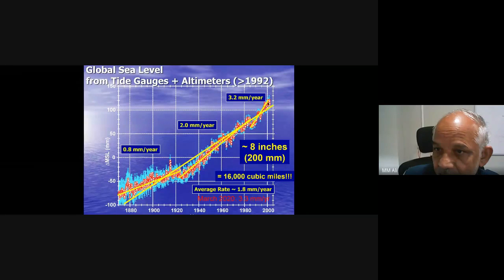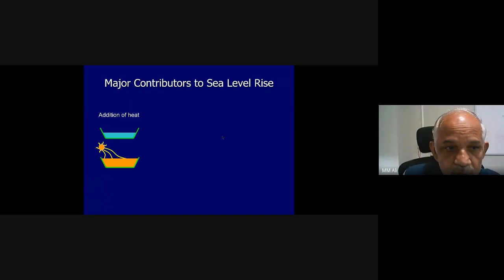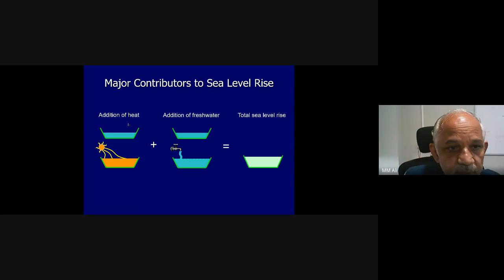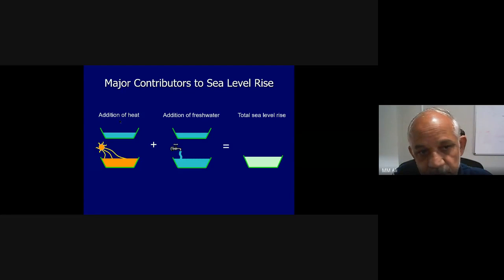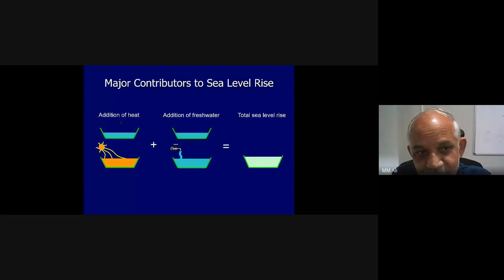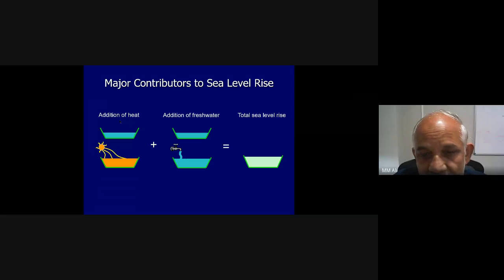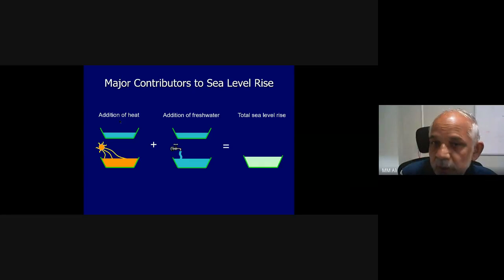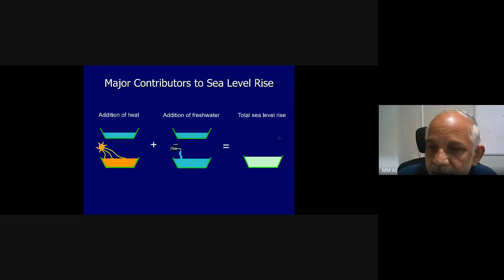The major contributors to sea level rise are: addition of heat — when temperature increases, volume increases, pushing sea level up — and addition of fresh water from glaciers and snow melt. Together these two factors produce the total sea level rise. The total sea level rise is the sum of the steric component (due to heat) and the mass component (due to fresh water addition).